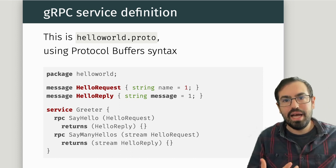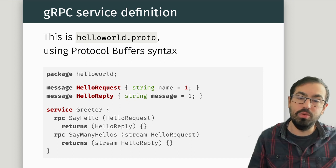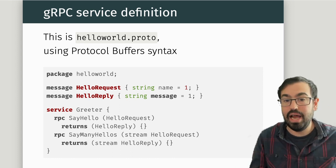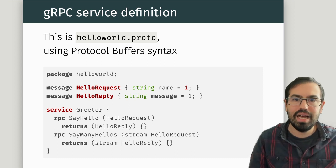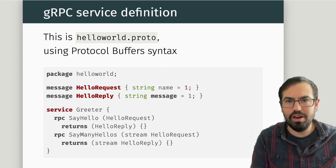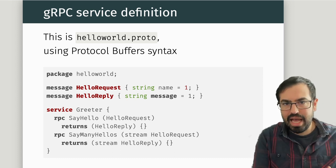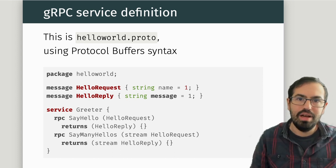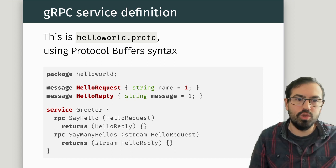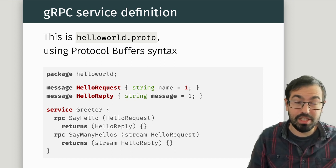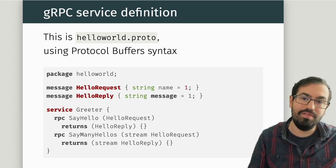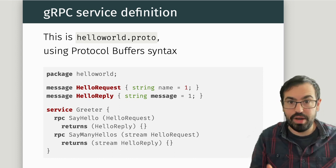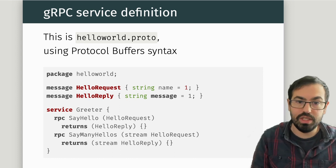One method is SayHello, which takes a HelloRequest and returns a HelloReply. Then we also have SayManyHellos, which takes and returns a stream of those things. I wanted to show you the streams because that's one of the reasons you may want to use gRPC instead of REST — you have streaming possibilities, even bidirectional streaming, as with SayManyHellos.